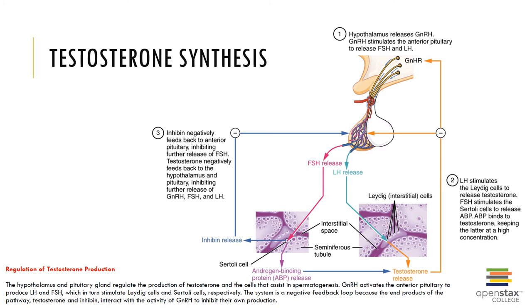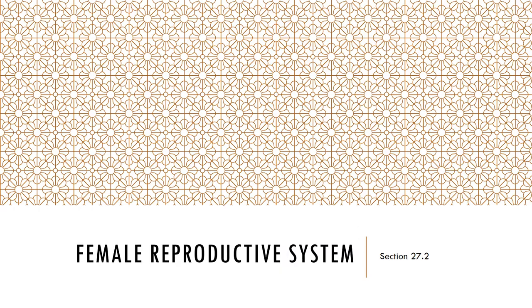Testosterone synthesis and the regulation of testosterone production are shown here. The hypothalamus and pituitary gland regulate the production of testosterone and the cells that aid in spermatogenesis. GnRH activates the anterior pituitary to produce LH and FSH, which in turn stimulate the Leydig cells and Sertoli cells respectively. This is a negative feedback system because the end products — testosterone and inhibin — interact with GnRH to inhibit their own production.